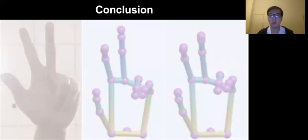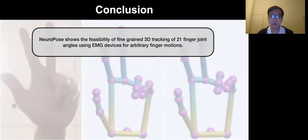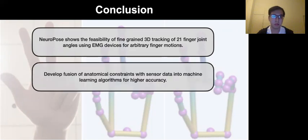Overall, our system NeuroPose shows the feasibility of fine-grained 3D tracking of 21 finger joint angles using EMG devices for arbitrary finger motions. We developed fusion of anatomical constraints with finger sensor data into machine learning algorithms for higher accuracy.